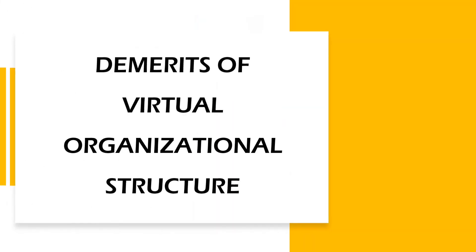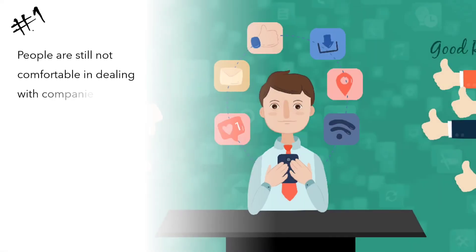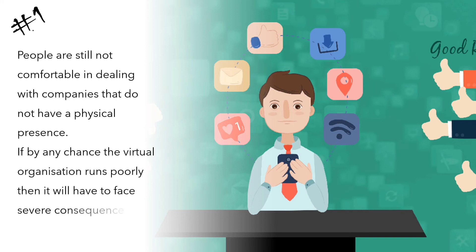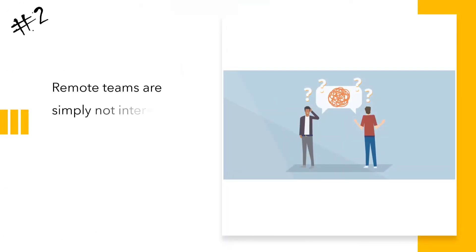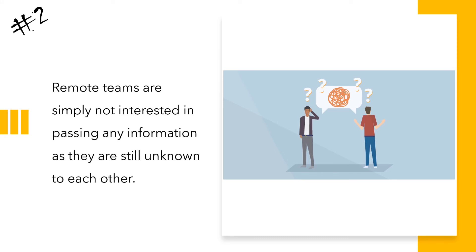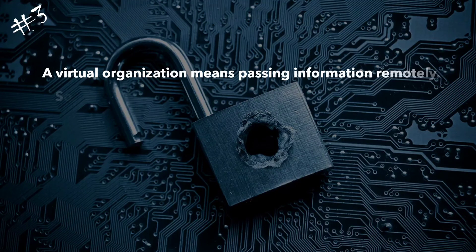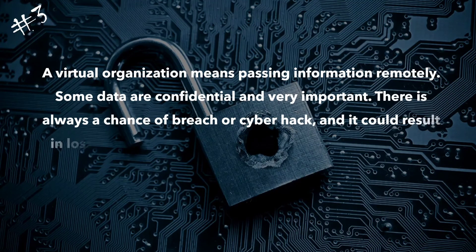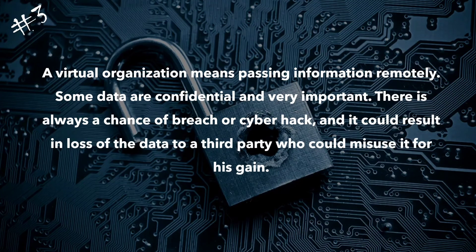Demerits of Virtual Organizational Structure: Reputational risk — people are still not comfortable dealing with companies that do not have a physical presence, and if the virtual organization runs poorly, it will face severe consequences in terms of reputational risk. Less communication — remote teams are simply not interested in passing information as they are still unknown to each other. Compliance and security issues — passing information remotely poses risks, as some data is confidential and important; there is always a chance of a breach or cyber hack resulting in loss of data to a third party who could misuse it.